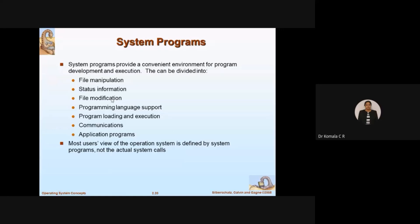File modification allows you to reuse and make changes to existing programs. Programming language support covers whether you go for a high-level language, machine language, or assembly language. In embedded systems, for example, you may use assembly language, C, or Java, and the system provides the appropriate interfaces — compilers, assemblers, etc. System programs also provide program loading and execution.